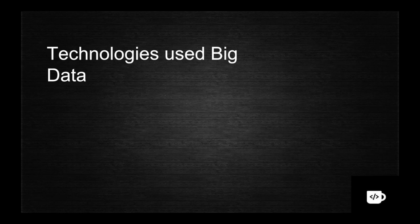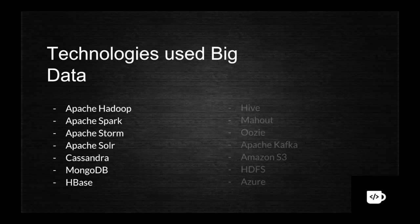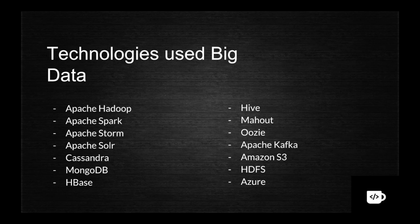The different technology stacks for processing big data include Apache Hadoop, Spark, Storm, Solr, Cassandra, MongoDB, HBase, Hive, Mahout, Oozie, Apache Kafka, Amazon S3, and HDFS. There are more, but these are the key ones you will commonly hear about. We will cover each of these with examples in the next video. In this video we understood what big data is, why we need it, why it is important, and what the different technologies are — along with use cases in healthcare and real-time data processing.